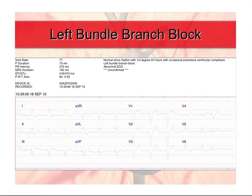Here's an example. You'll notice that left bundle branch blocks look wider and uglier — more malignant, for lack of better words. They tend to be worse because you have two fascicles on the left, so every left bundle branch block is a bifascicular block. And most of our myocardium is on the left, so you're having a lot more of that slow cell-to-cell conduction, which is why the QRS is a little wider.